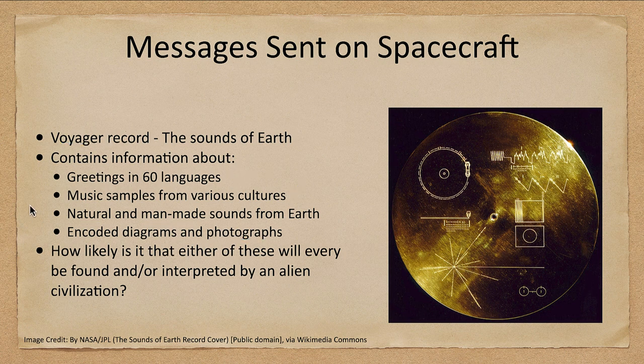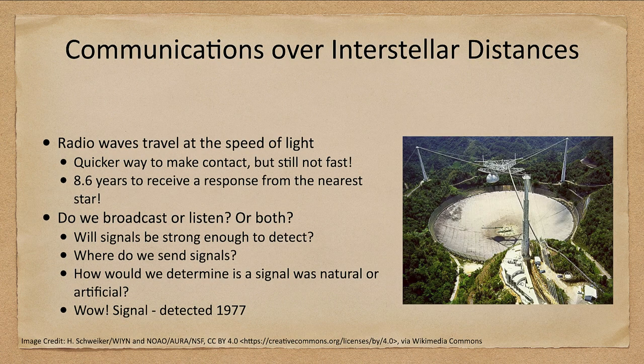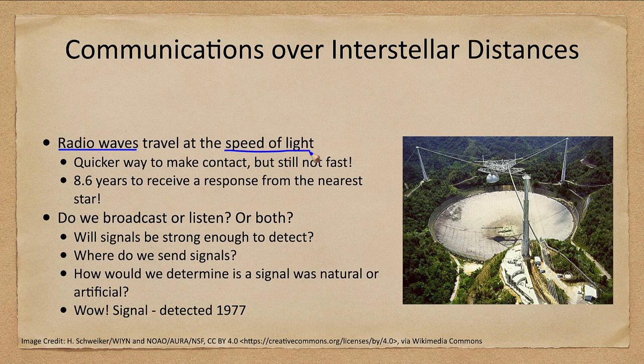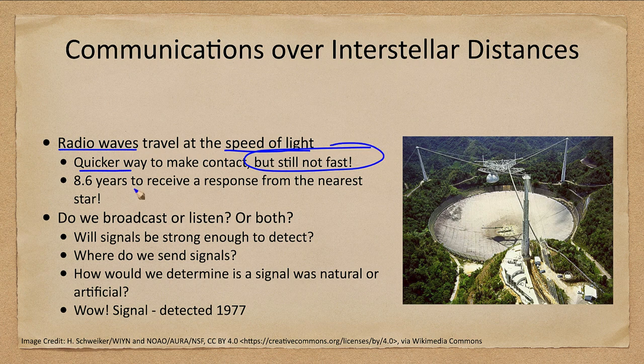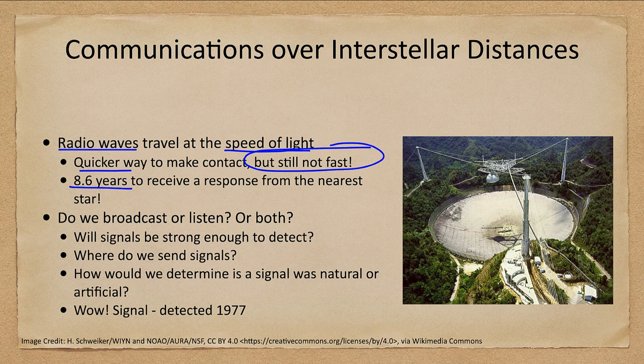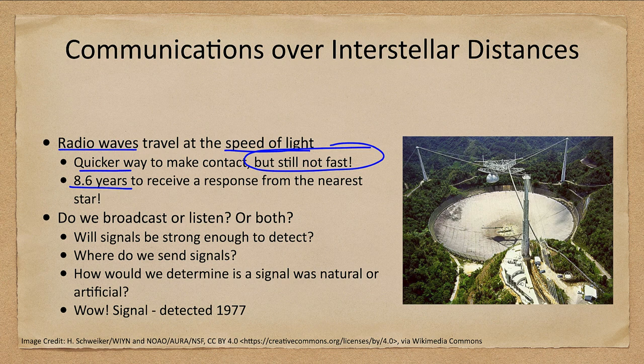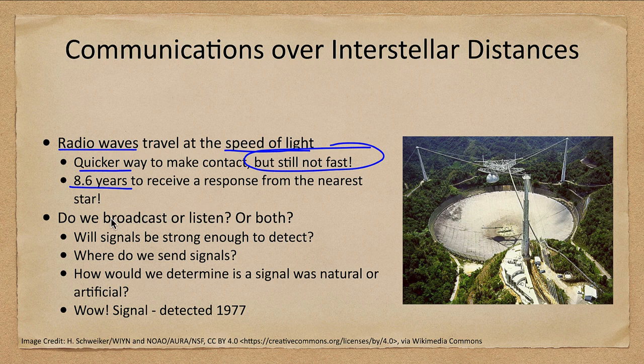So since neither of these work, how can we communicate? Well, one advantage is that radio waves travel at the speed of light. So this is a quicker way to make contact, but it is still not a fast way. It would take over eight and a half years to receive a response from the nearest star. That's 4.3 years to get there. And if they immediately responded, it would take 4.3 years to get back.